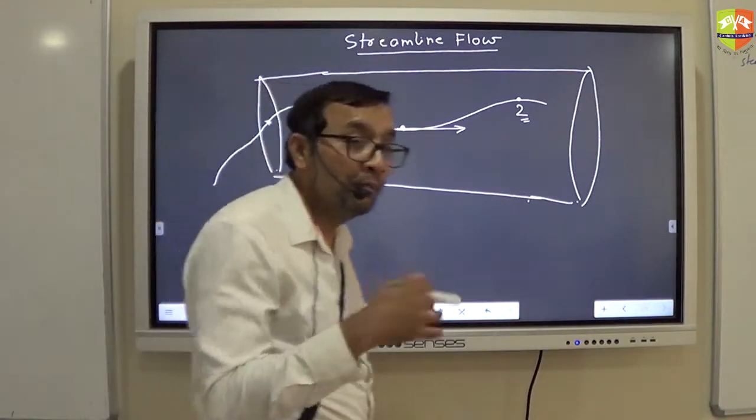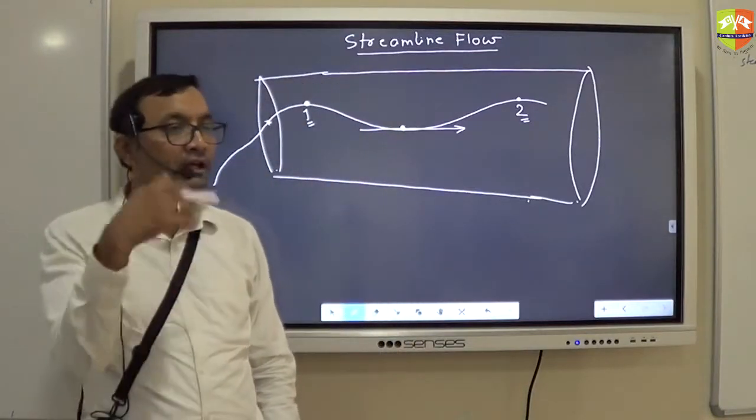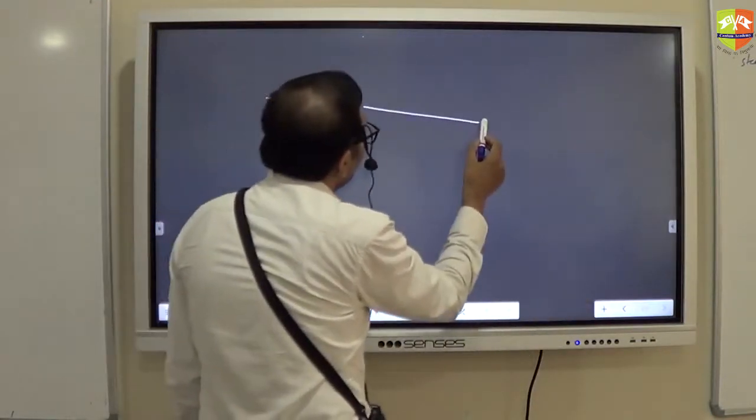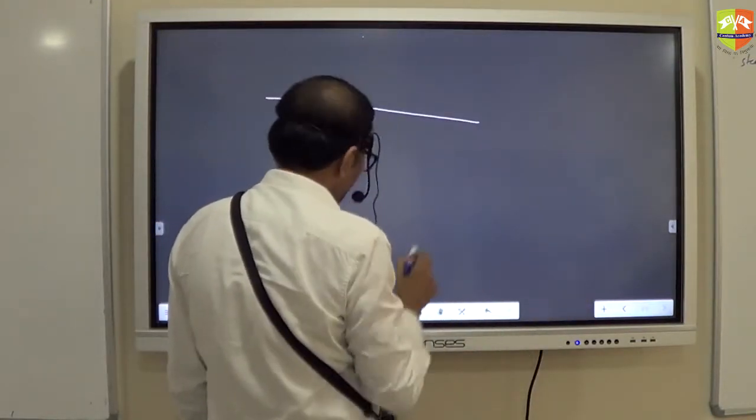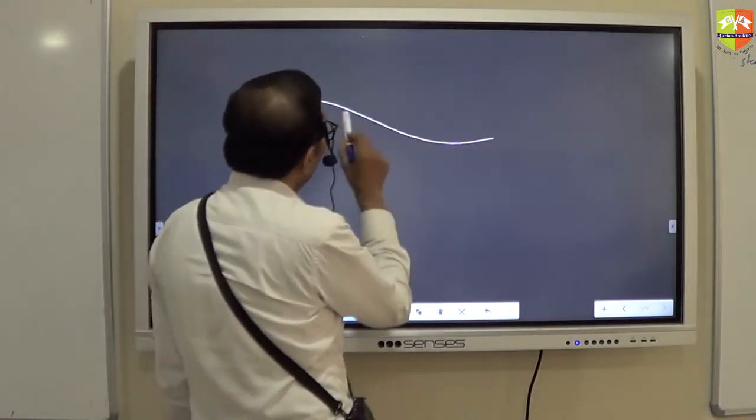Now, streamline gives you more information than just telling you about the direction of flow. Let us see how. For example, if you take... first, sorry, I missed that.